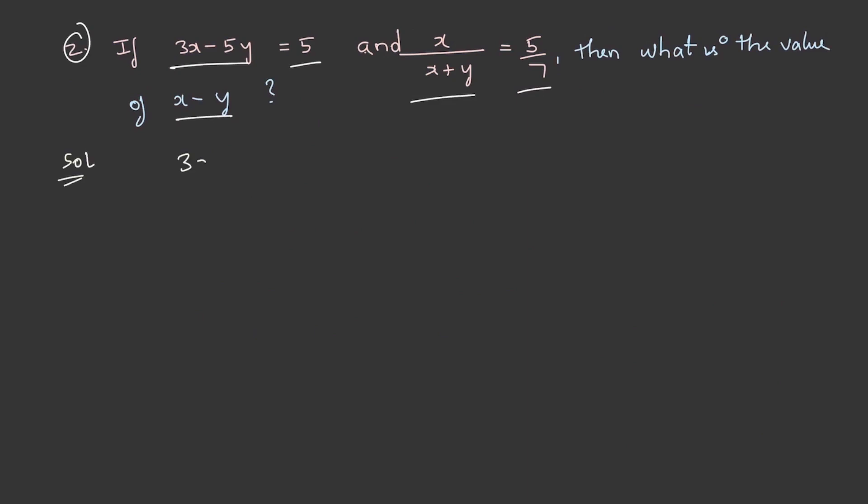Let us solve this. 3x - 5y = 5. Let us name this as the first equation. x/(x + y) = 5/7 is what is given. Let us convert this into equation form.